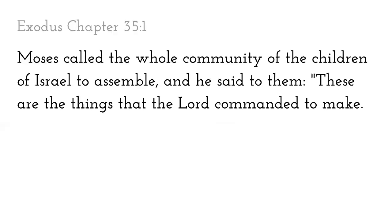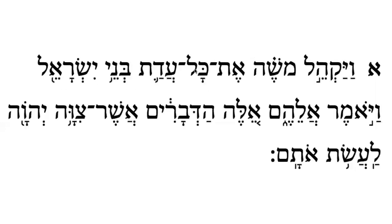The ayin with a khataf patach says 'ah,' and a dalet with a patach and tav at the end says 'dat' — so 'adat.' Adat means 'congregation' or 'assembly.' So Moshe assembled the entire congregation: 'Vayakhel Moshe et kol adat.'